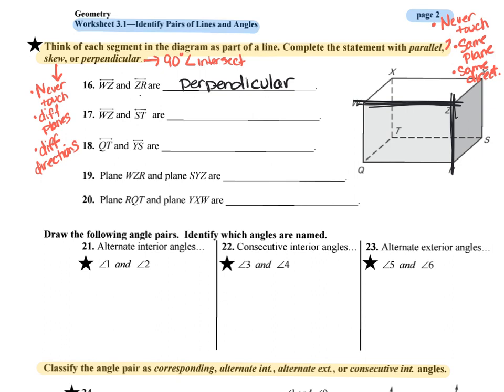For question 17, they ask about WZ, which again goes across the front, and ST, which is down here on the bottom. When we look at those two lines, we ask ourselves: do they intersect? No — one is on top and one is on the bottom. Since they never intersect, we ask: do they go the same direction? Because they both go left and right, that's the same direction, making those lines parallel.